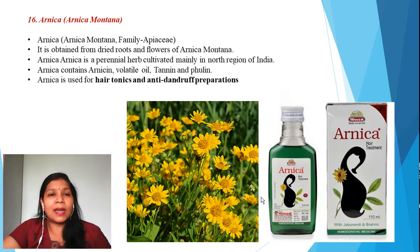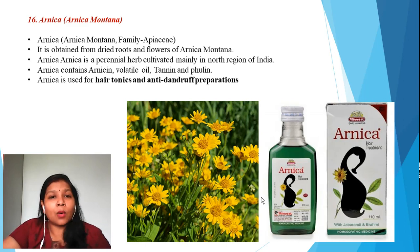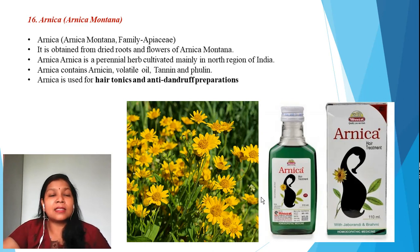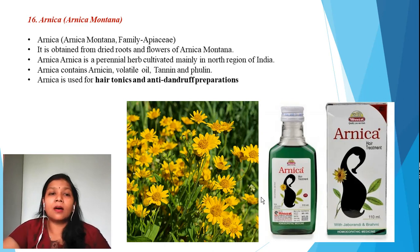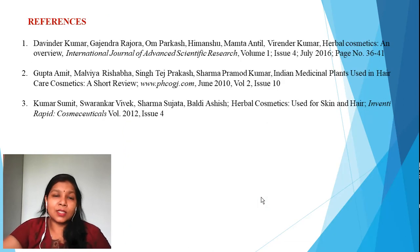The sixteenth ingredient is arnica, belonging to the family Asteraceae. The botanical name is Arnica montana. It is obtained from the dried roots and flowers of Arnica montana — a beautiful yellow-colored flower cultivated as a perennial herb in the northern region of India. Arnica contains arnisan, different volatile oils, tannins, and fulin. Arnica oil can be incorporated in hair tonics and anti-dandruff preparations.